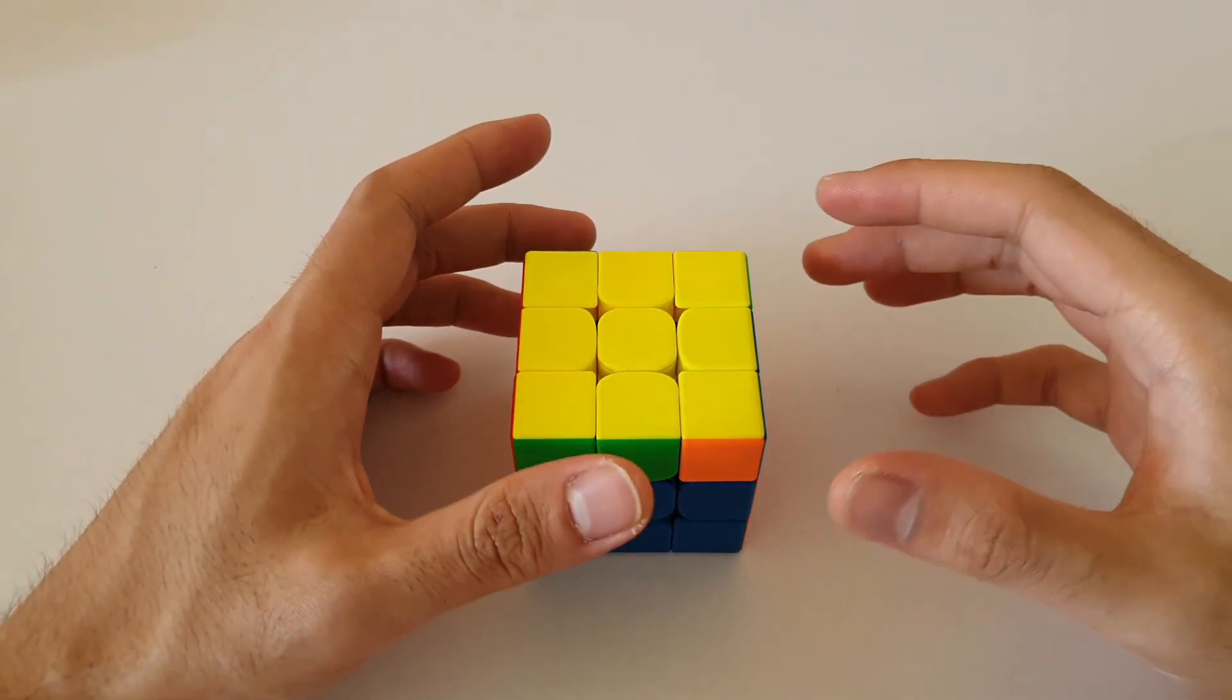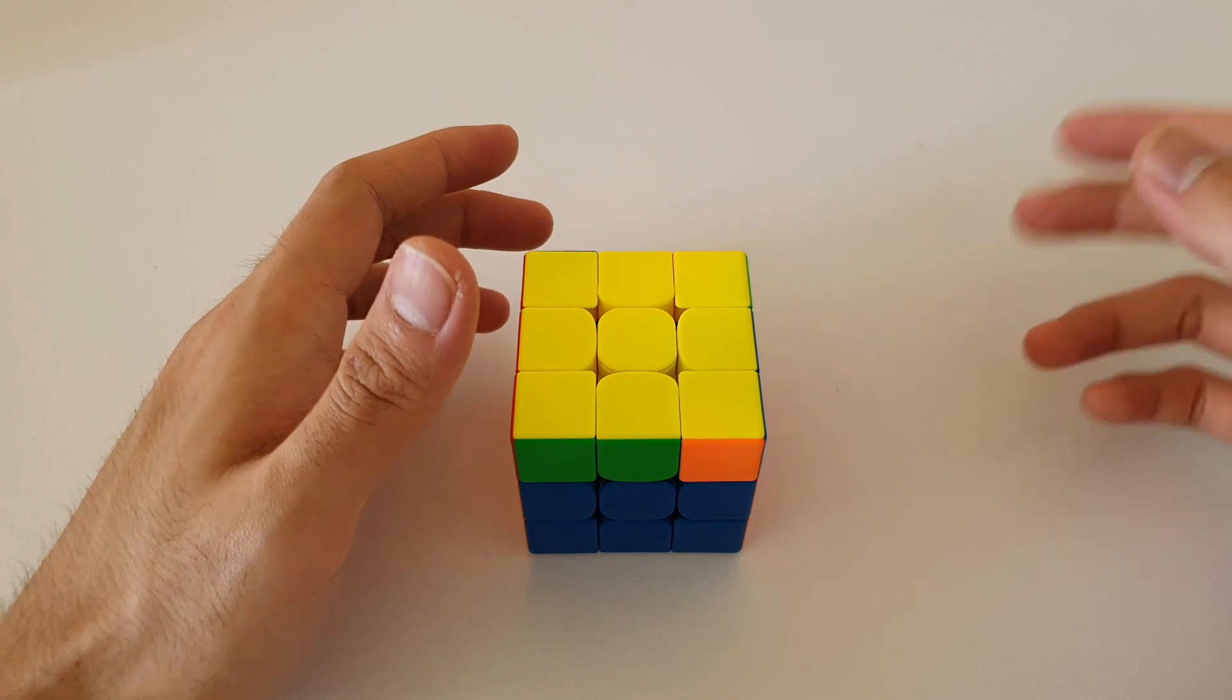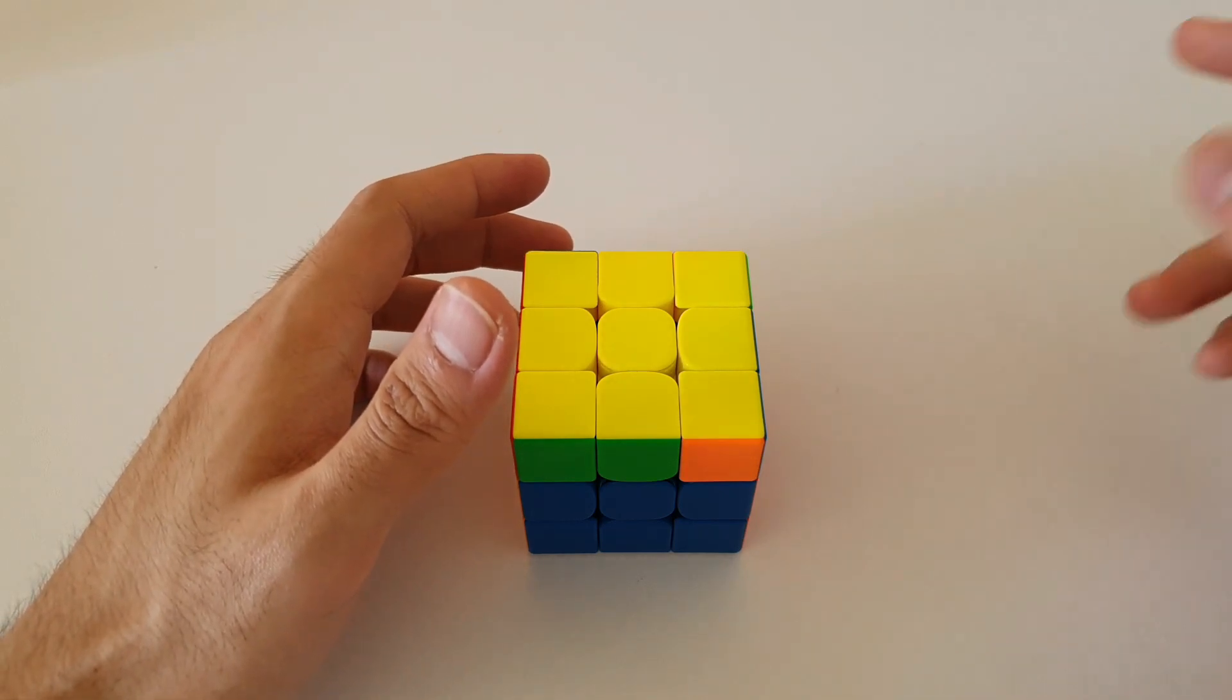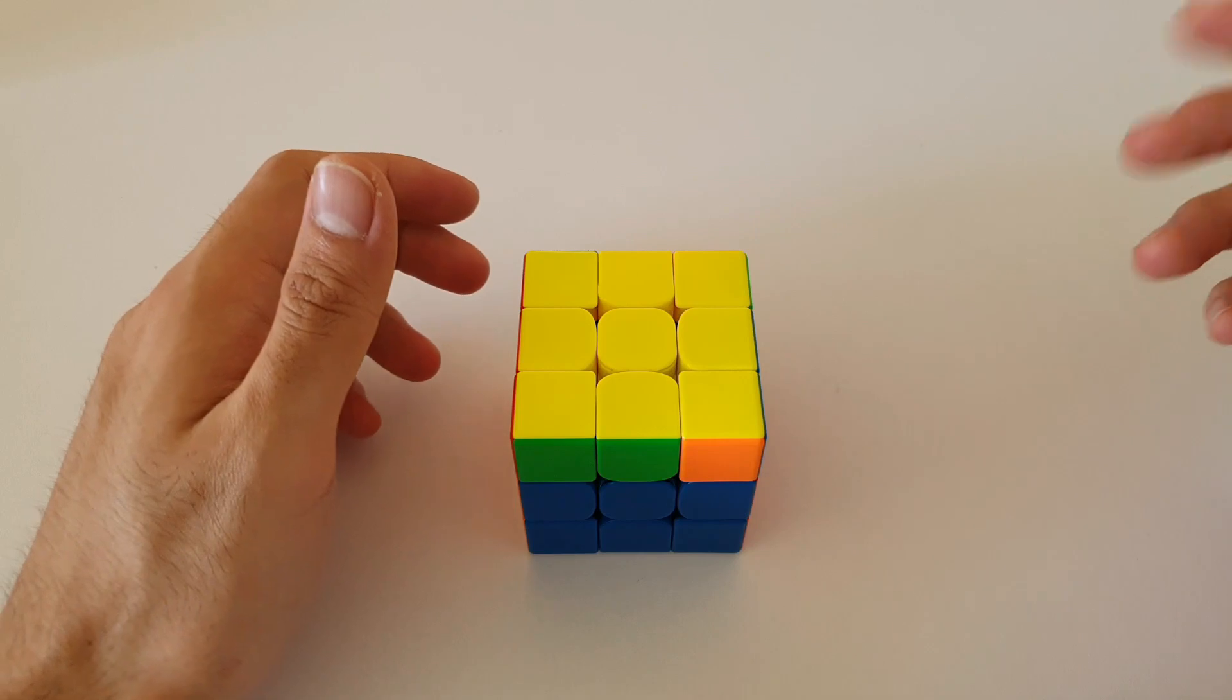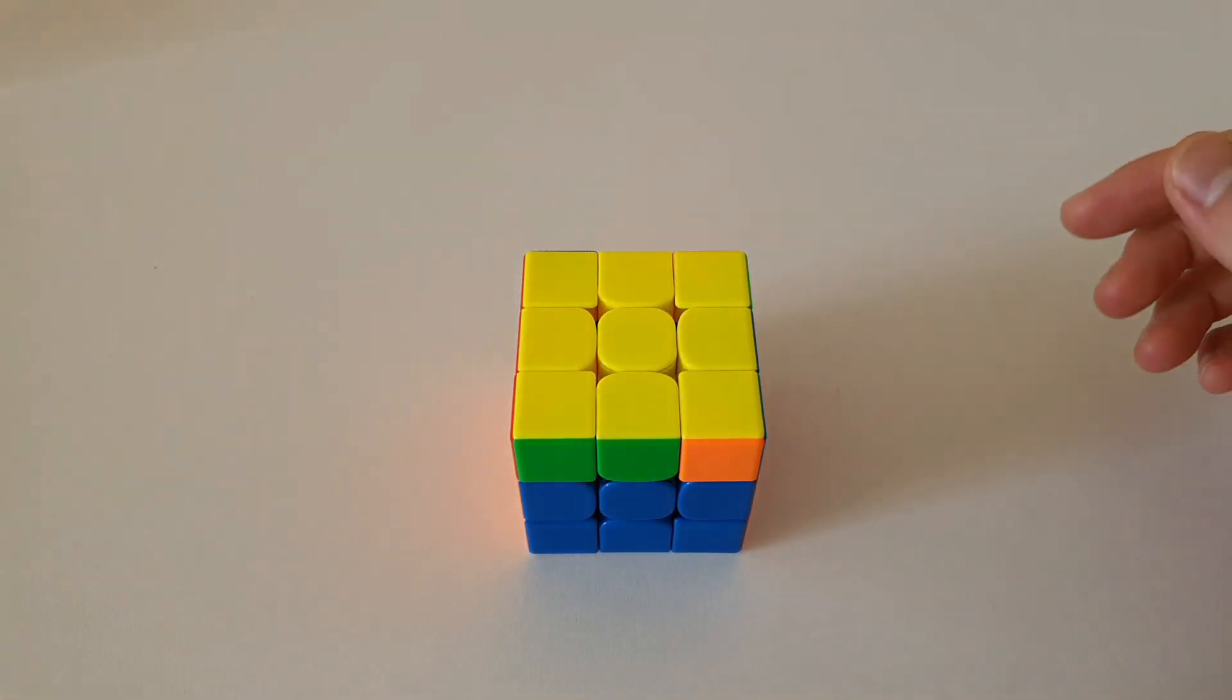Alright guys so that's it for the OLL algorithms for the W shapes and the C shapes. I hope you guys found this video helpful. If you have any questions about anything in this video feel free to leave it in the comment section down below or you can message me on social media. Links to those will also be in the video description. Thanks again for watching and I'll see you guys in the next video.